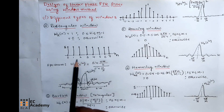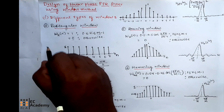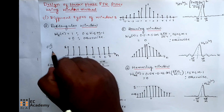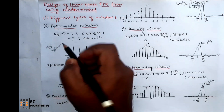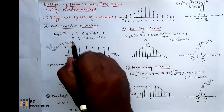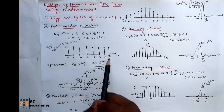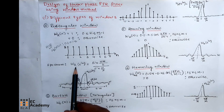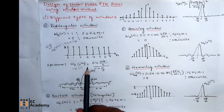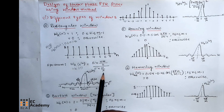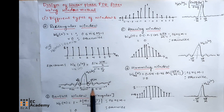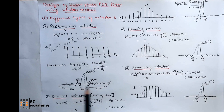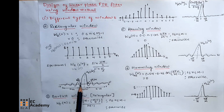This is the time domain representation of the rectangular window. If we take M equal to 8, we can write WR(N) = 1 for N ranging between 0 to 7, so from 0 to 7, WR will have amplitude 1. The spectrum of the rectangular window is given as WR(e^jω) = sin(ωM/2) / sin(ω/2). If you plot the spectrum, the main lobe and two side lobes are visible, and the main lobe width is 4π/M.